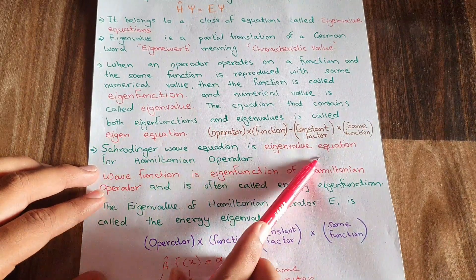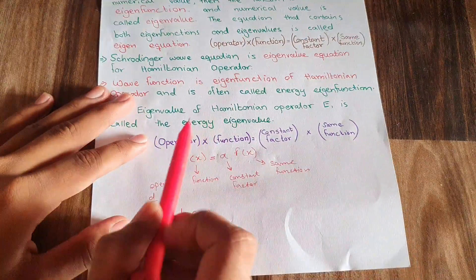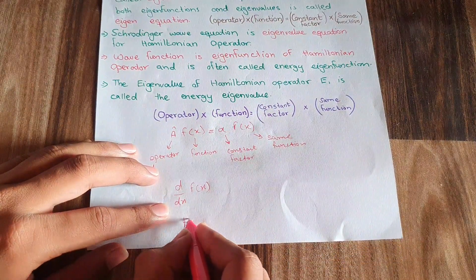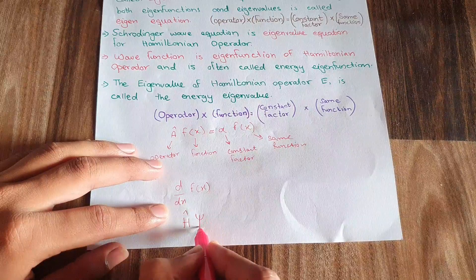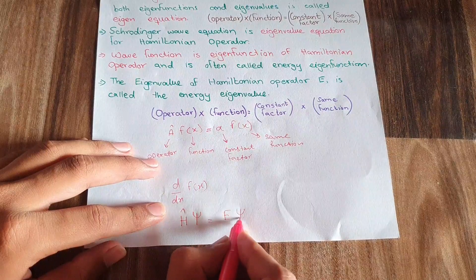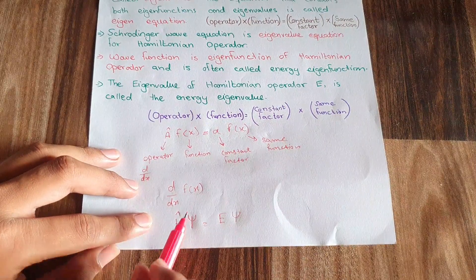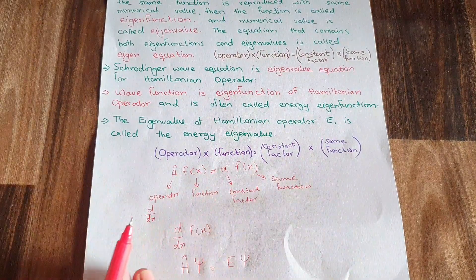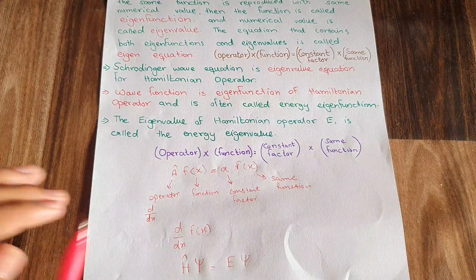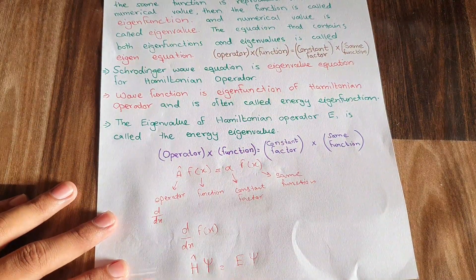The Schrödinger wave equation is an eigenvalue equation for the Hamiltonian operator. In the Schrödinger wave equation the operator is the Hamiltonian operator, the function is ψ, the constant factor is energy E, and the same function is ψ. So the Schrödinger wave equation follows the structure of an eigenvalue equation. The eigenvalue of the Hamiltonian operator E is called the energy eigenvalue.